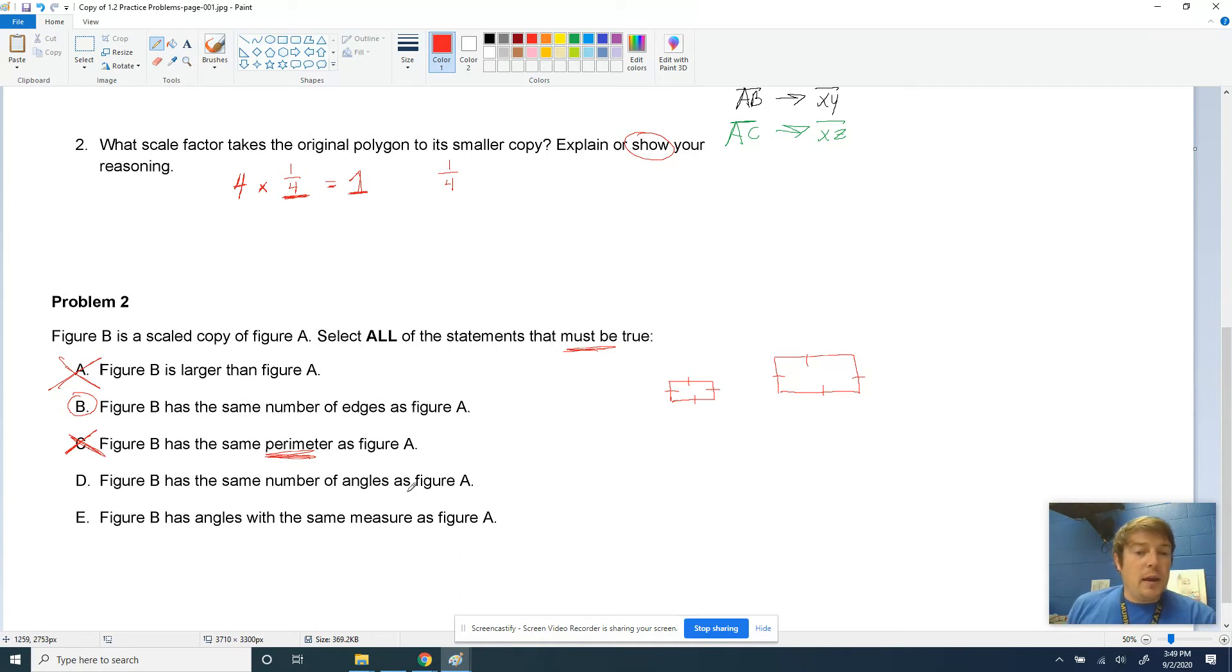Figure B has the same number of angles as figure A. If you look over here to our example, it's the same shape, so it's going to have the same angles. So definitely that's going to be true. And then figure B has angles with the same measure as figure A. If they are scaled copies, this is a big thing that we discussed, then all of the angles are equivalent. They are the same for both figures. So that's a big one. That's something that's true. Every one of these angles in this rectangle that I drew are right angles, and that's not going to change just because the sides got longer. Scaled copies have the same angle sizes. So B, D, and E for that particular one.